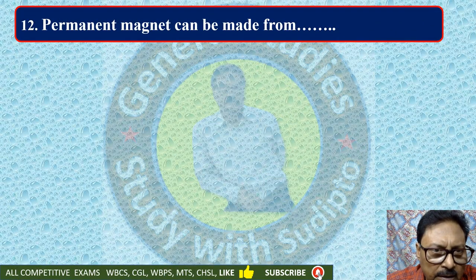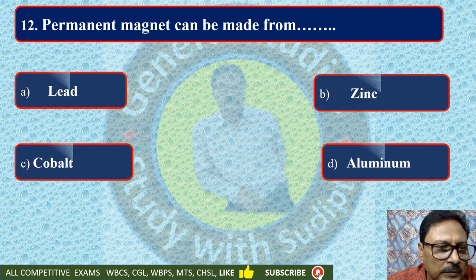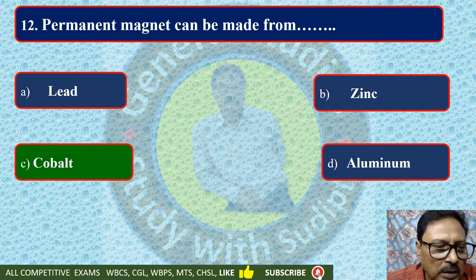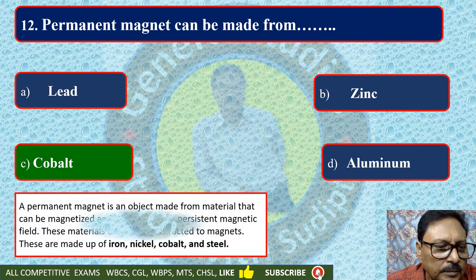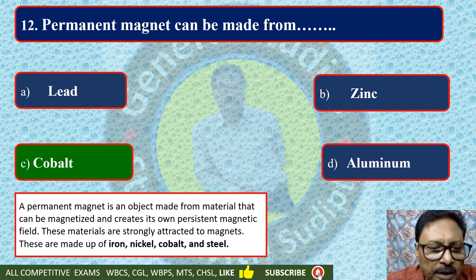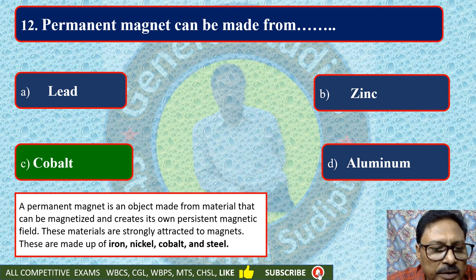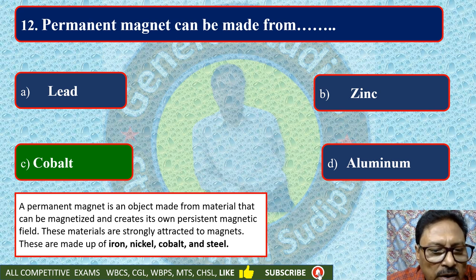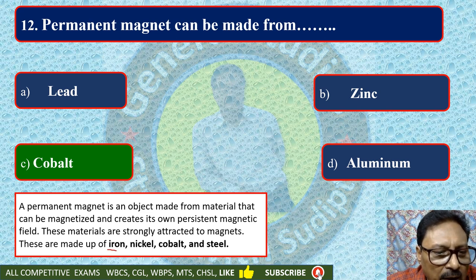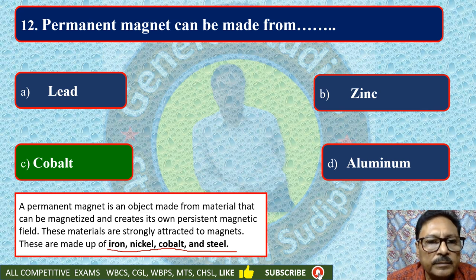Permanent magnets can be made from — lead, zinc, cobalt, or aluminium. The correct answer is cobalt. A permanent magnet is an object made from a metal material that can be magnetized and creates its own persistent magnetic field. These materials are strongly attracted to magnets and are made up of iron, nickel, cobalt and steel. Cobalt is a permanent magnet material.